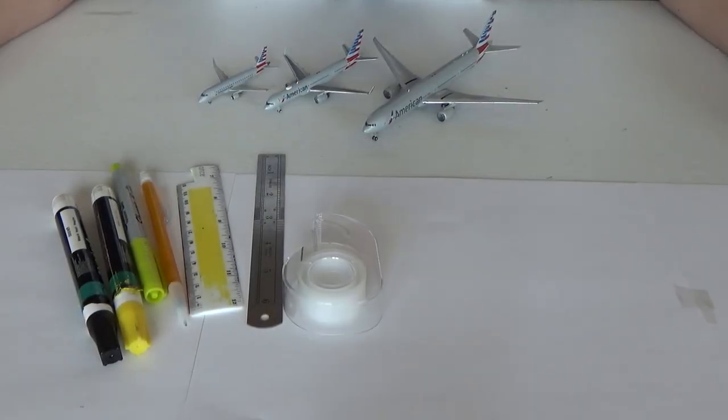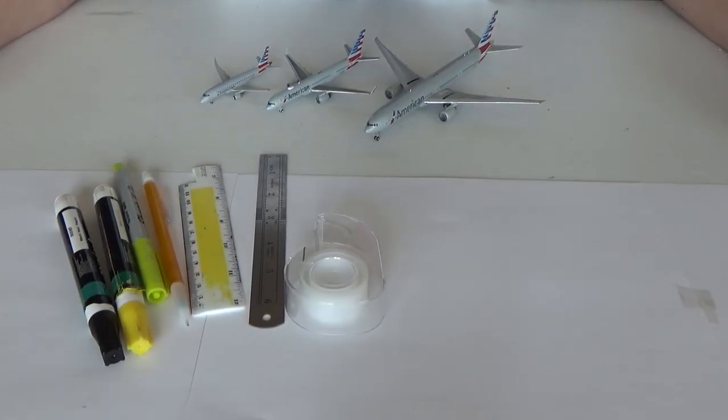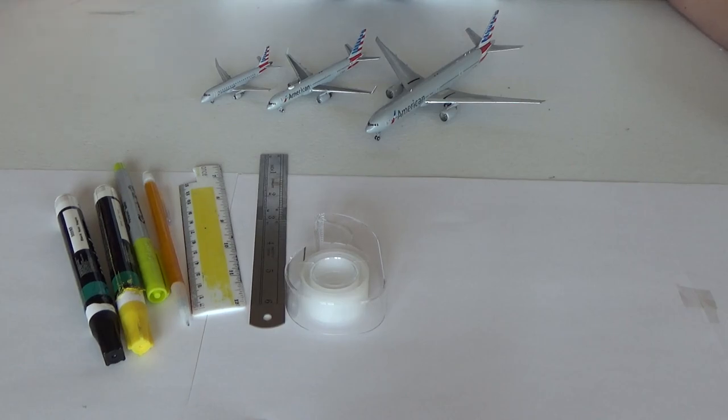What's going on everybody? Welcome back to Red River Aviation. Hope you guys are on a fantastic day today and today we have the redone 1-400 scale how to make a custom gate apron.